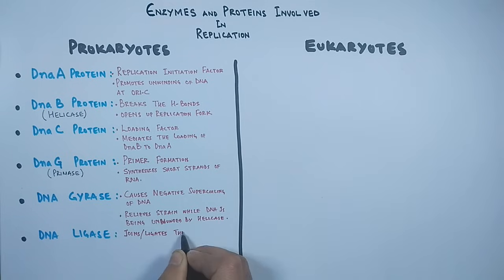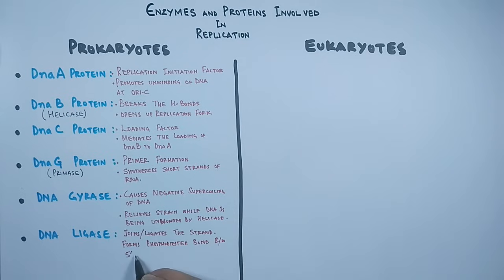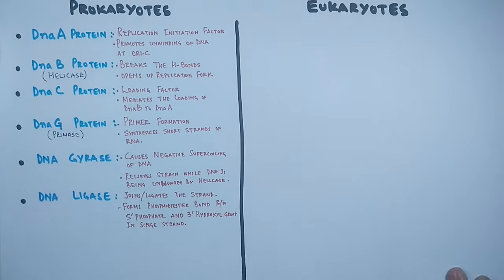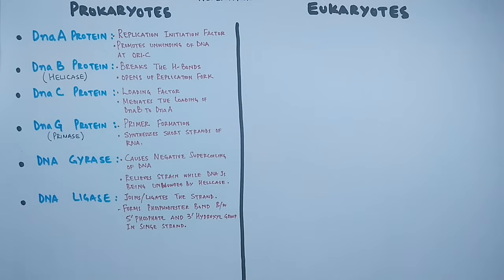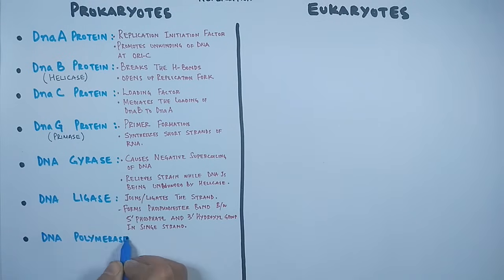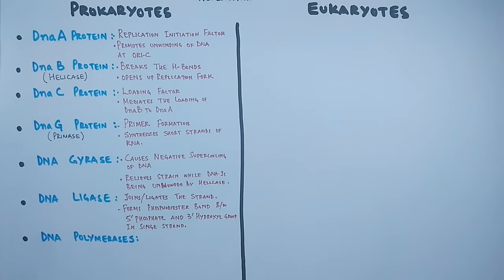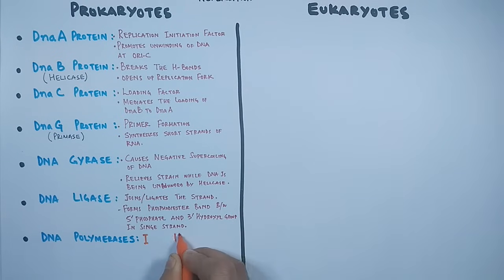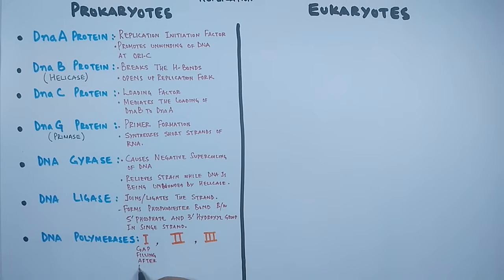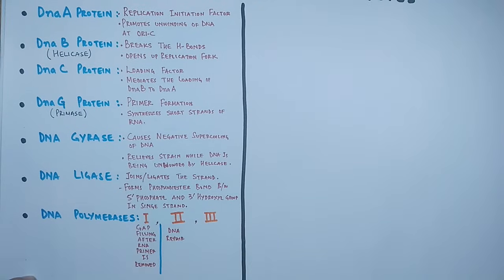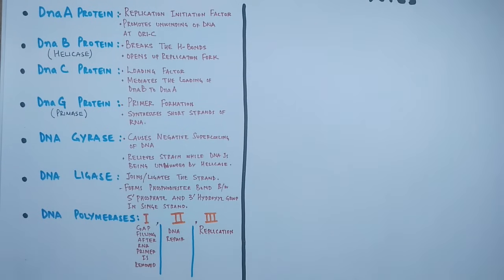Furthermore, there is a DNA ligase enzyme whose function is to ligate — to join — the two segments of DNA. On the lagging strand, DNA is synthesized in segments, so these segments need to be ligated, and it is this ligase enzyme which does the job. Ultimately there are DNA polymerase enzymes. In prokaryotes there is DNA polymerase I, DNA polymerase II, and DNA polymerase III. Polymerase I is used in gap filling after the RNA primer is removed, and DNA polymerase II is used in DNA repair.